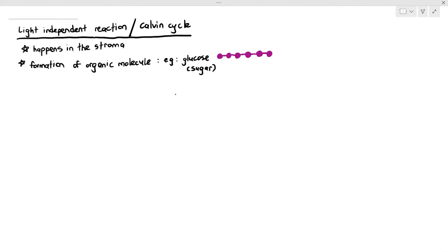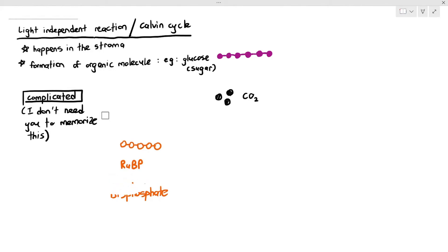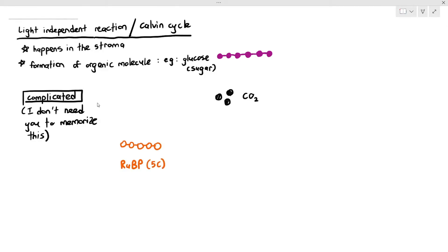Here is a detailed explanation of the light-independent reaction. For simplicity, let's start with three carbon dioxide molecules, each represented by a black dot. In the stroma of the chloroplast, there is another molecule called RuBP — ribulose bisphosphate. RuBP is a five-carbon molecule, represented by five orange circles joined together, so one molecule of RuBP is made up of five carbons.